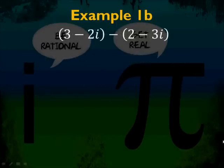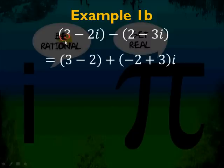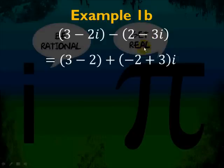Try example 1b yourself: 3 minus 2i minus 2 minus 3i. You have 3 minus 2 for the real part, and negative 2 plus 3 for the i part, because you have a negative and a negative. So you end up with 1 plus i. You don't need to put 1i — 1 plus i is your answer.